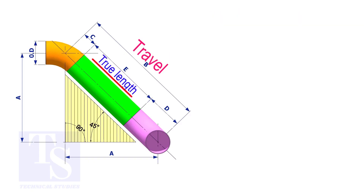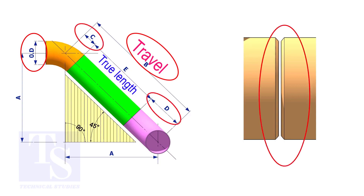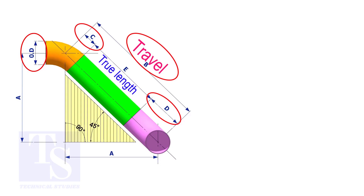To calculate the true length or the cut length, we need to know the travel length, the diameter of the pipe, the joint gap, and the elbow center. The elbow center is sometimes called the takeoff length.